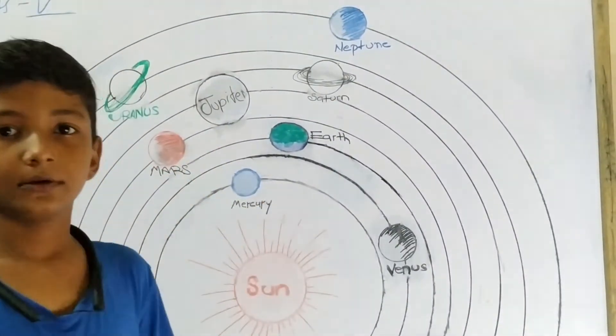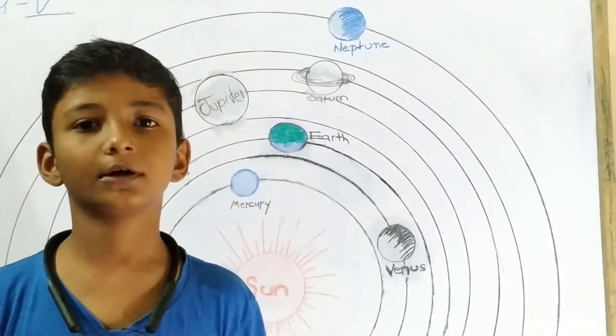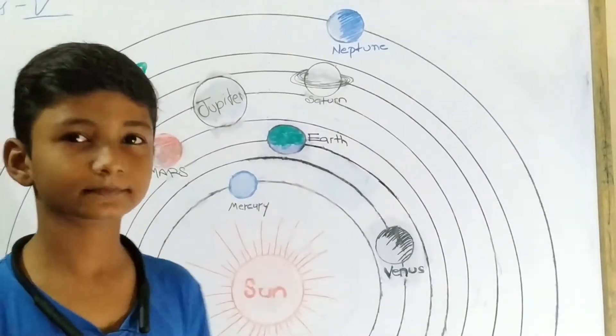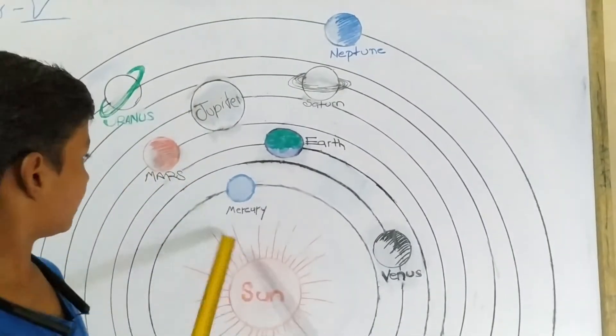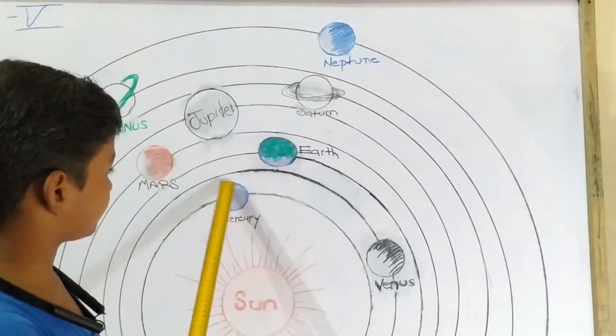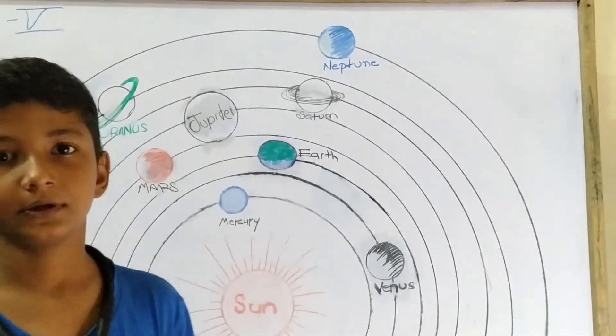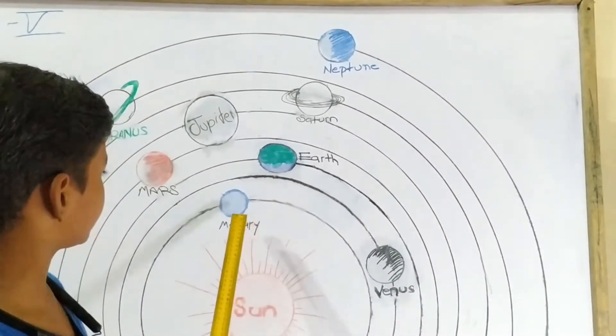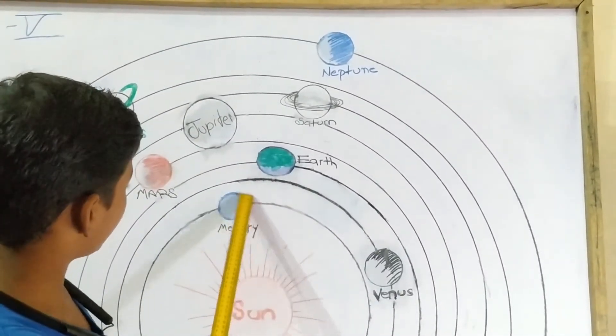Mercury is the closest planet to the Sun. It is a very hot, dry, and airless planet. It is also the smallest planet in our solar system. There is no atmosphere on the surface around Mercury.